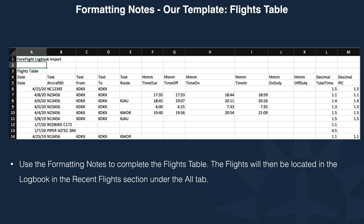If you don't have times, only dates from flights years ago, the program can only import the data you present it. If you have a tail number and a date but no time, you'll still get a flight and an aircraft entry, but no times will be applied toward your totals. Just like a paper logbook, only what you put in it will be represented — if you leave the rest of the entry empty, it's still in your logbook, it's just not adding up towards your totals.